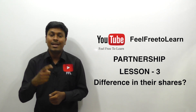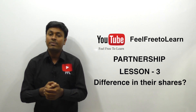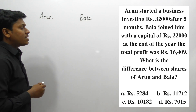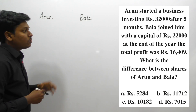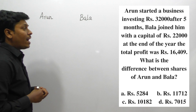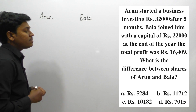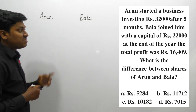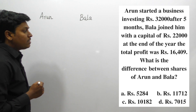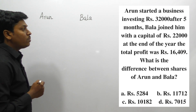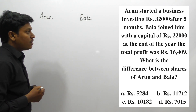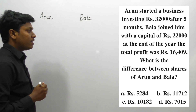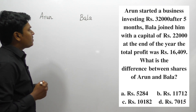Question number one: Arun started a business investing 32,000 rupees. After five months, Bala joined him with a capital of 22,000 rupees. At the end of the year, the total profit was 16,409 rupees. What is the difference between the share of Arun and Bala?